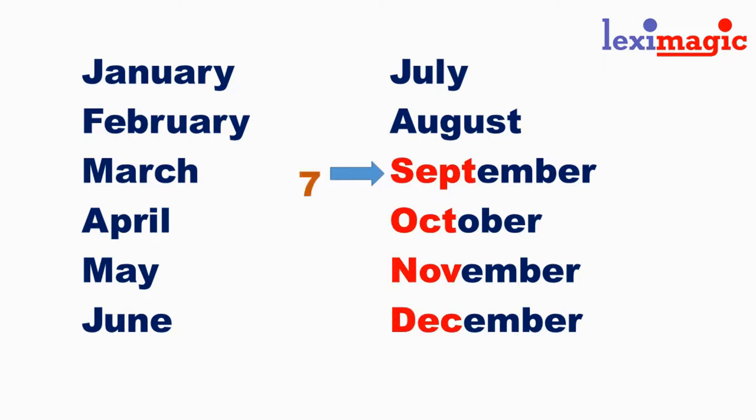We find the root 'sept' which indicates the number seven in the month September, 'oct' which indicates the number eight as in octagon, 'nov' which stands for the root nine, and 'dec' as in decimal and decagon, which stands for the root ten.